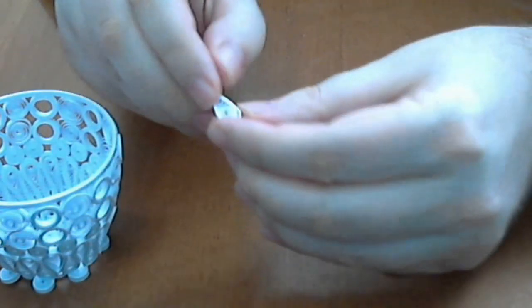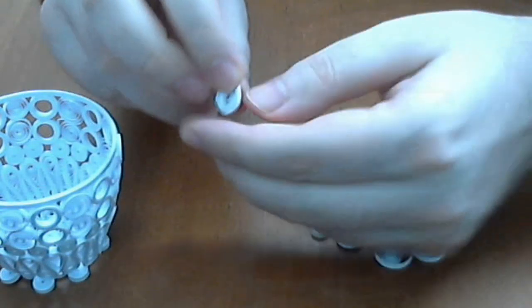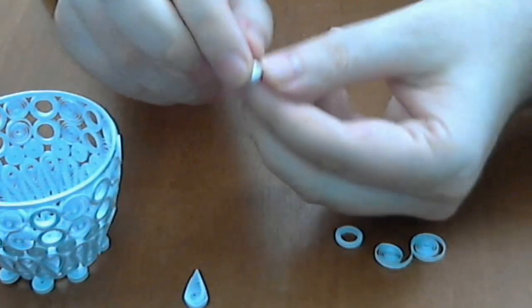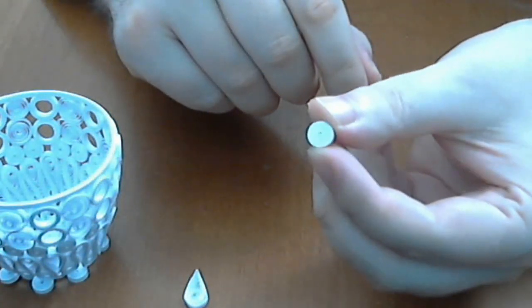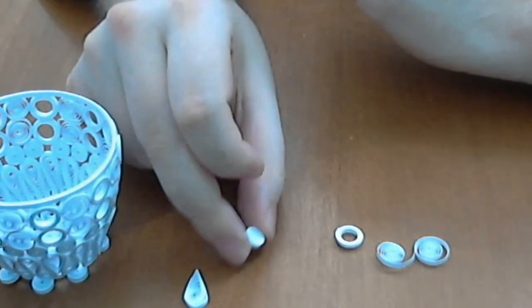These are teardrops. You will have a link to a tutorial about how to make this piece. This is a full circle quilling piece. You will have a link to a tutorial also.